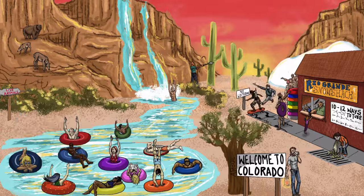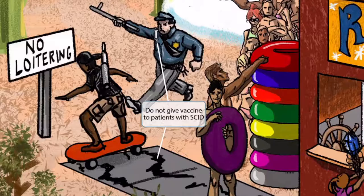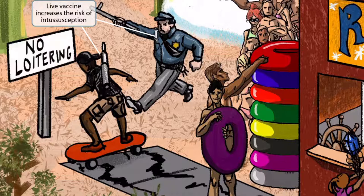If you look to the right side of the image, a policeman is chasing away a punk kid who's skateboarding on the sidewalk. That punk kid is skateboarding on private property next to a 'No Loitering' sign and making very prominent skid marks on the ground. These skid marks represent Severe Combined Immunodeficiency, or SCID. The policeman has a syringe in his pocket, which is our symbol for the vaccine. The fact that the policeman is chasing away this kid making skid marks is here to help you remember that the live vaccine should not be given to patients with SCID.